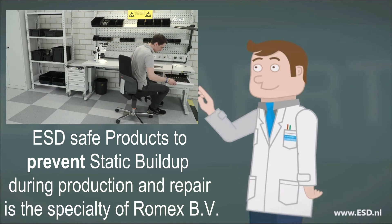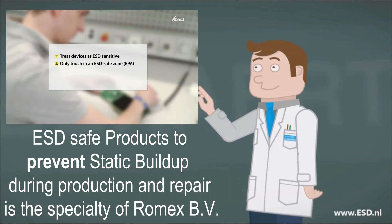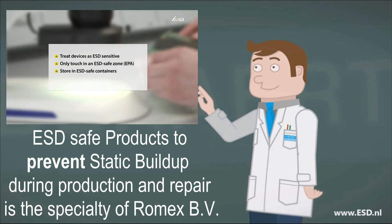In summary, here are four tips for handling electronic devices safely: always assume that all active components are ESD sensitive, only touch electronic devices within ESD safe zones, store and transport ESD sensitive devices in ESD safe containers, and inspect your ESD protection system regularly.